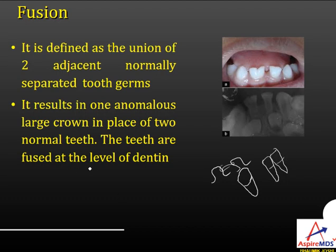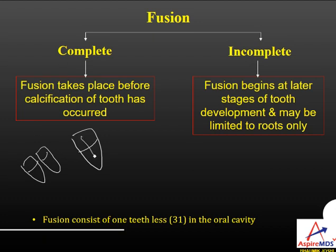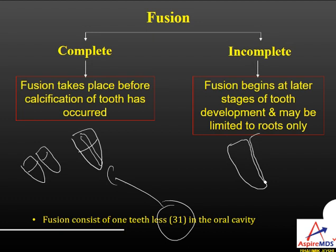Complete fusion takes place before calcification of the tooth bud occurs — two separate teeth would have formed, but instead a larger single tooth forms, so the number of teeth is less than 32 (that is, 31). In incomplete fusion, it begins at a later stage and may be limited to roots only. If limited at root level, the tooth number will remain the same as 32.